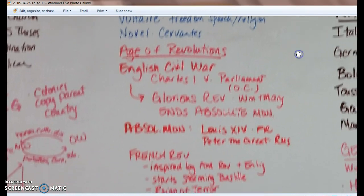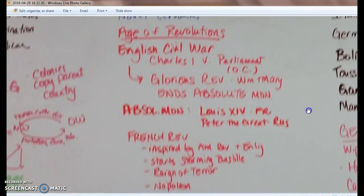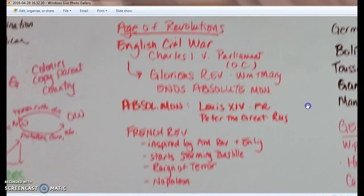We're putting Enlightenment ideas into action. We have absolute monarchs like Louis XIV — he's French, builds the Palace of Versailles, and rules for 72 years. He's also known as the Sun King. Absolute monarchs rule by divine right — they get their authority from God and have total power. Peter the Great wants to westernize Russia.